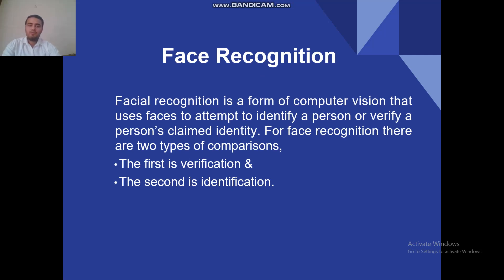Now Face Recognition. The face is an important part of a person's identity because the face is the most unique characteristic of every person. While humans have the ability to recognize other humans, they can recognize others easily using the face. For face recognition there are two types of experiments: the first is verification and the second is identification. Facial recognition is a form of computer vision that uses the face to attempt to identify a person or verify a person's claimed identity.